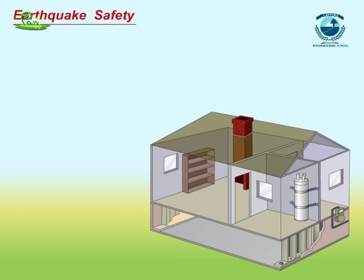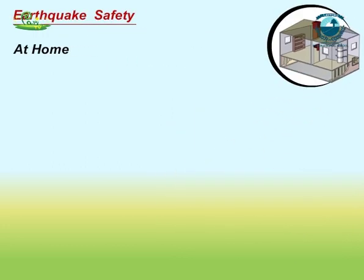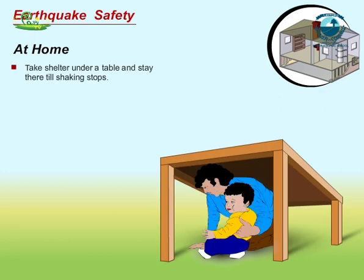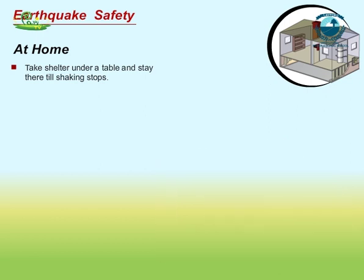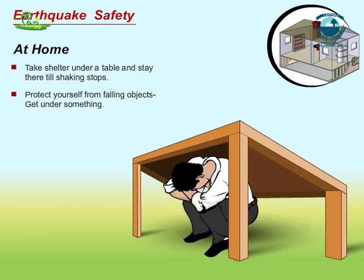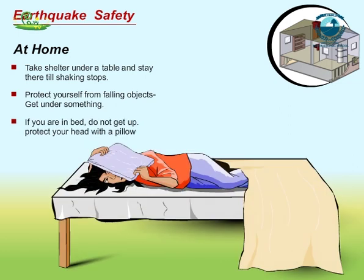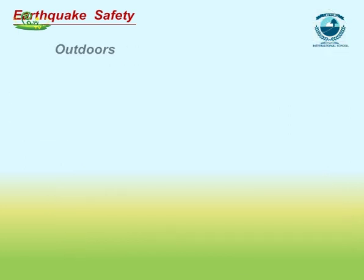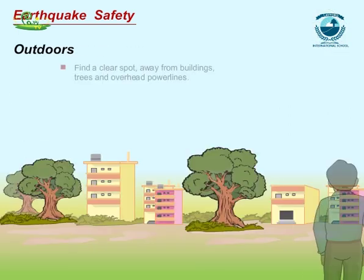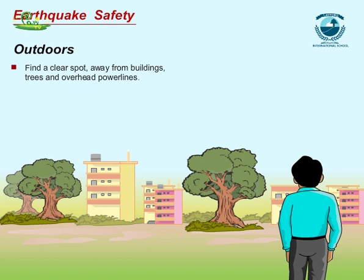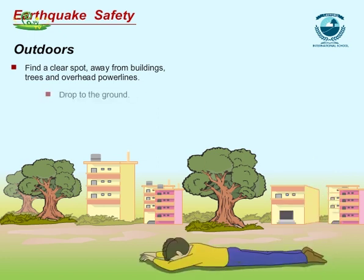Protection against earthquake — during an earthquake: earthquake safety at home — take shelter under a table and stay there till shaking stops. Protect yourself from falling objects. If you are in bed, do not get up; protect your head with a pillow. Outdoors: find a clear spot away from buildings, trees, and overhead power lines, and drop to the ground.